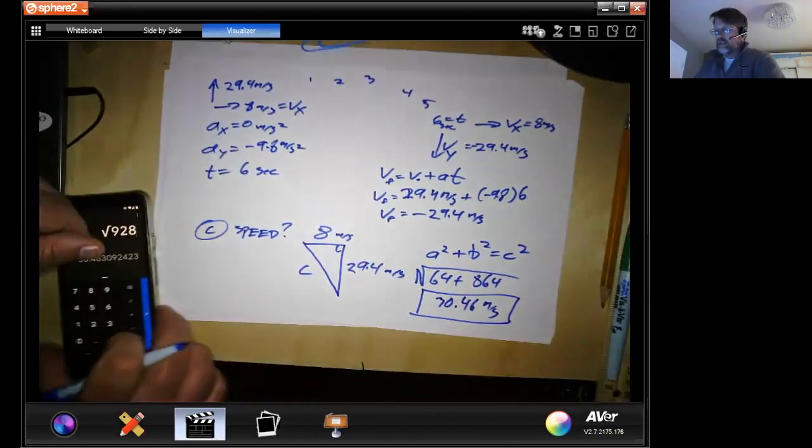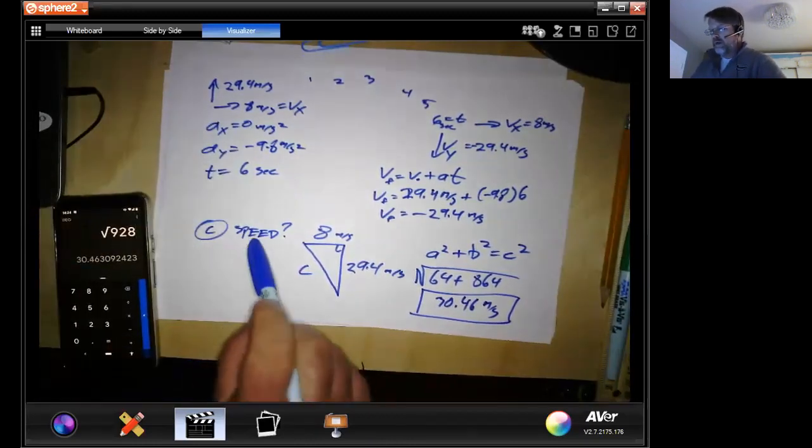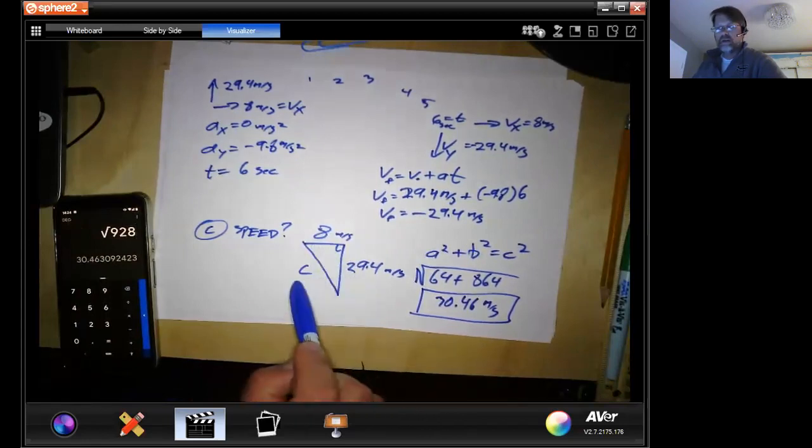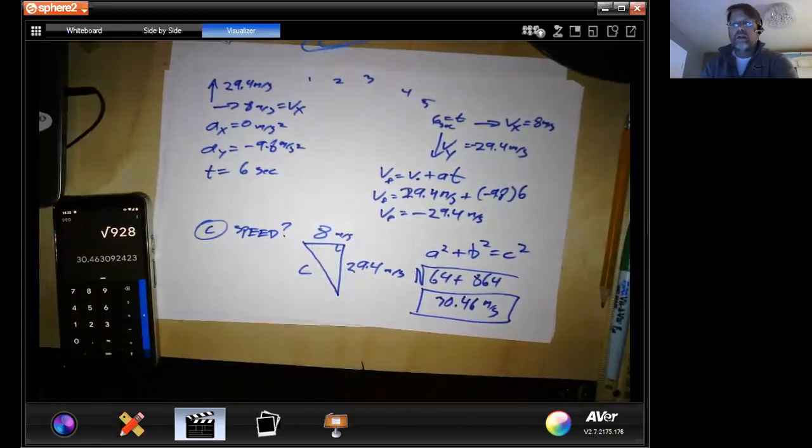So that is the difference. When they're asking for speed, we cannot have direction, which means we have to combine our two components together again. All right, so hopefully that is a model that you can use for all the equations. And then we can come back on Wednesday with any questions you have.